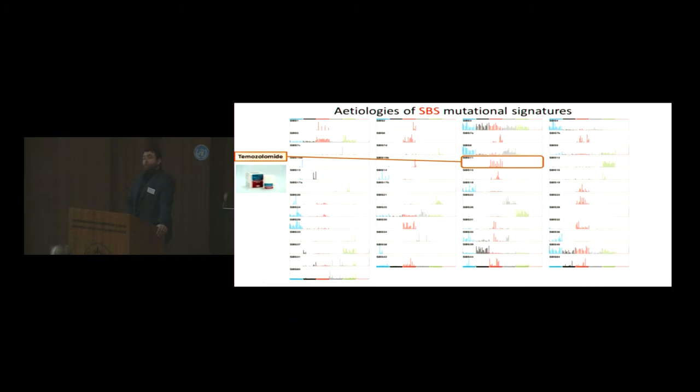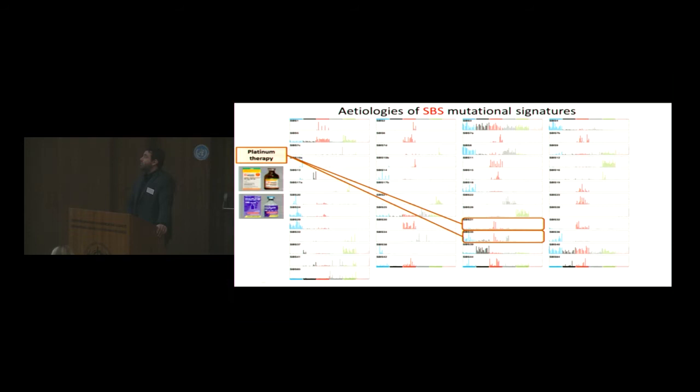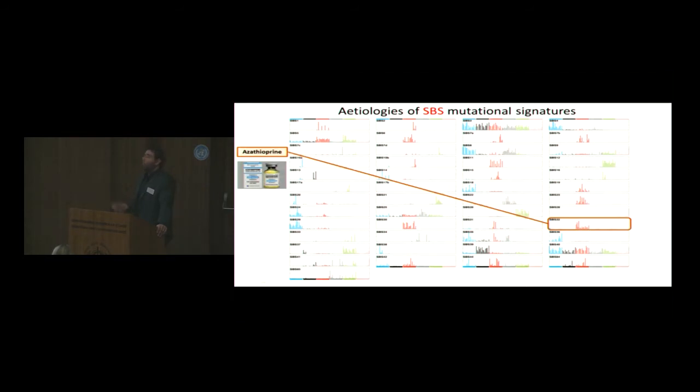Temozolomide, patients who had primary cancers, they were treated, they either had a recurrence or secondary cancer. We can see the chemotherapy. Temozolomide has signature 11 in most cases. Platinum therapy, there is at least two signatures of platinum therapy, signature 31 and signature 35. Azathioprine, I'll tell you more about azathioprine, it's an immunosuppressant, it has its own mutational signature, that's signature 32. Haloalkanes, signature 42.